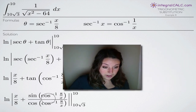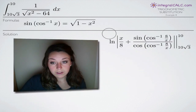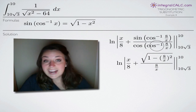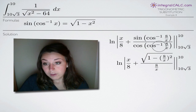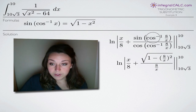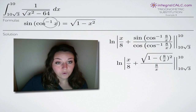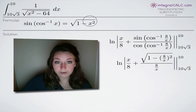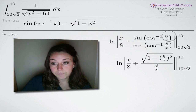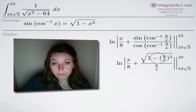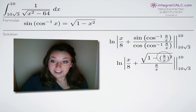In the denominator, cosine and inverse cosine cancel, leaving 8 over x. For the numerator, we use the formula that sine of the inverse cosine of a value equals the square root of 1 minus that value squared. With 8/x inside, we get the square root of 1 minus (8/x) squared in the numerator. Then, since we have a fraction divided by a fraction, we multiply by the inverse, and distributing the squared exponent gives us 64 over x squared inside the square root.